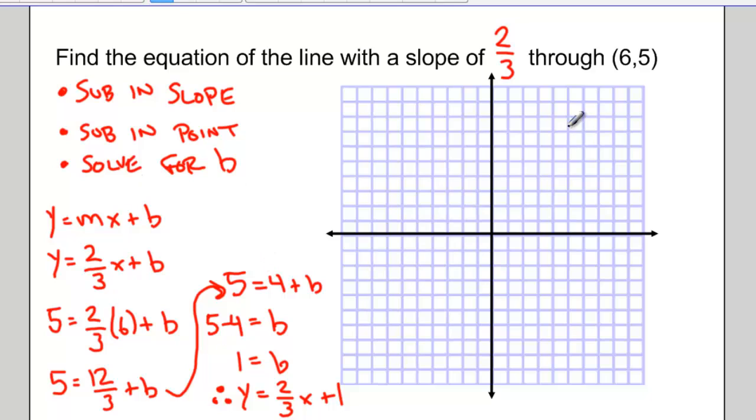And I did all of that without having to graph my equation. If I wanted to graph this and try and verify, I could plot my y-intercept of 1, my slope of 2 thirds. So up 2 over 3, up 2 over 3. I'll connect that with a line. And there's my line with a slope of 2 thirds going through the point 6 and 5.